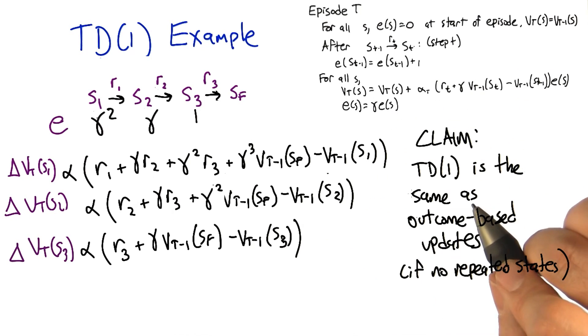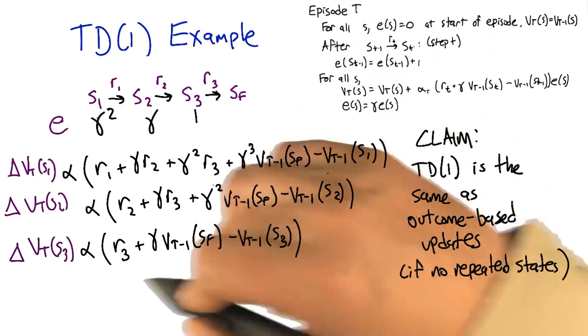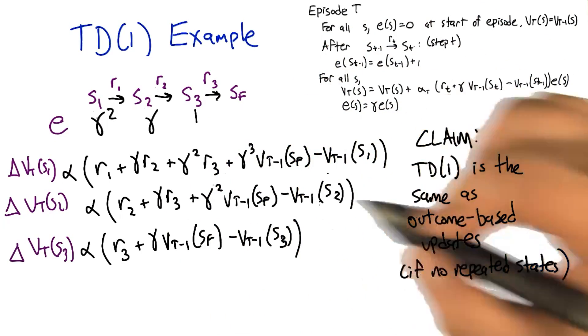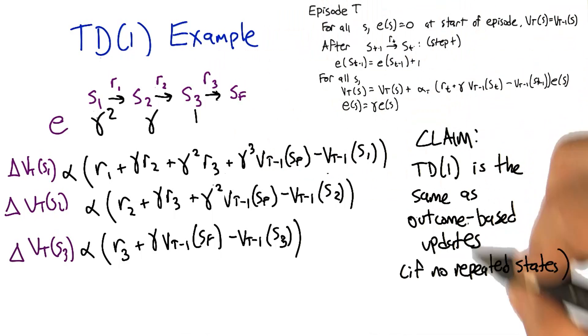So at least in the case where there's no repeated state, so we visit a state more than once along a trajectory, everything beautifully cancels and what you get is exactly the same update. The TD1 update is exactly the same update as just waiting for the outcomes and updating based on that. That's actually really impressive.